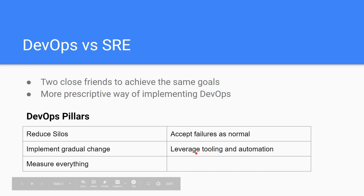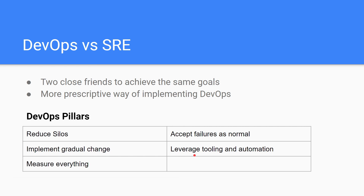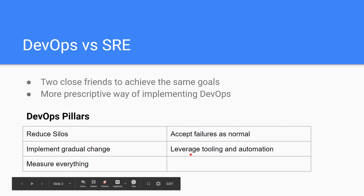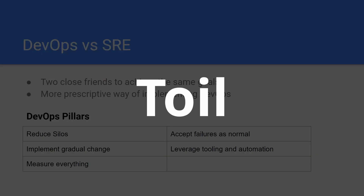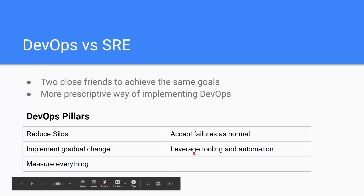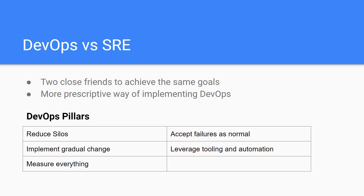The fourth pillar is leverage tooling and automation. In DevOps you have many tools — Git, Ansible, Jenkins — for automating your manual tasks. SRE preaches the same: eliminate manual work by automating as much as possible. In SRE terms, the word for this is toil. For example, if you manually scale an instance every time there's a traffic spike, that repeated manual task is toil. Instead, you can automate scalability with auto-scaling and reduce the toil. SRE measures toil and wants engineers to automate those tasks.